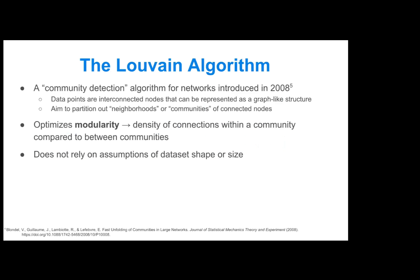The next algorithms I'm going to be talking about are the Louvain and Leiden clustering algorithms. These are two closely related algorithms, with Leiden being an extension of Louvain. The Louvain algorithm is essentially a community detection algorithm for network datasets, and was first introduced in 2008.